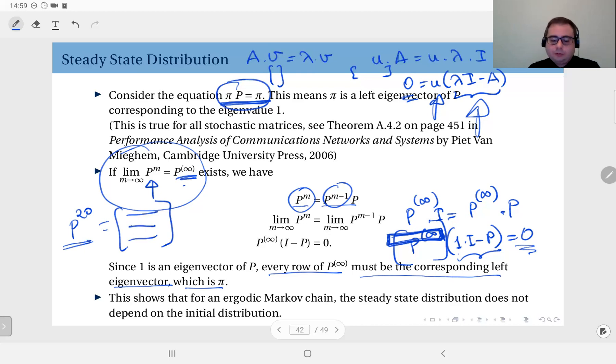π and P^20 matrix had converged to all equal rows. So that was not a coincidence. This is the result of this observation. Every row there converges to π, the steady state distribution, because every row of here constitutes a left eigenvector. So this also should show you that for an ergodic Markov chain...